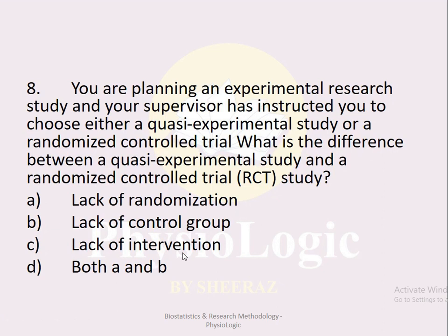MCQ number eight: What is the difference between a quasi-experimental study and a randomized control trial? Option a lack of randomization, option b lack of control group, option c lack of intervention, option d both a and b. The correct option is option d, both a and b. In an RCT, individuals are randomly divided and a control group is always present. In a quasi-experimental study there may be a lack of randomization or a lack of a control group.